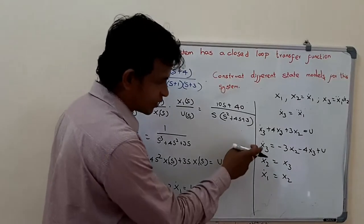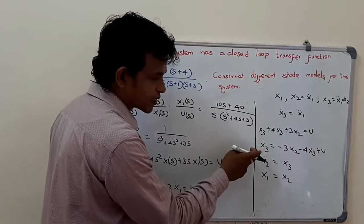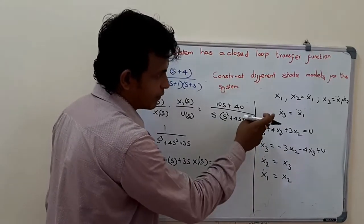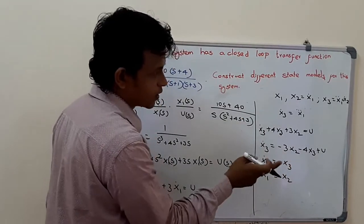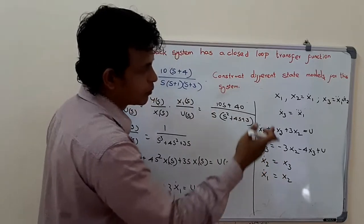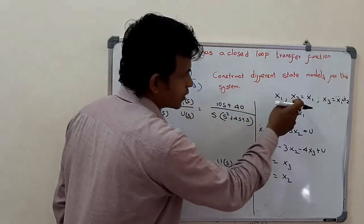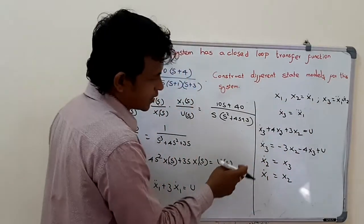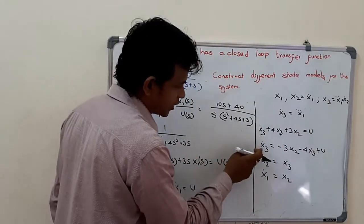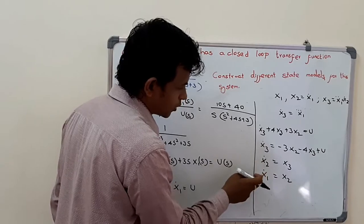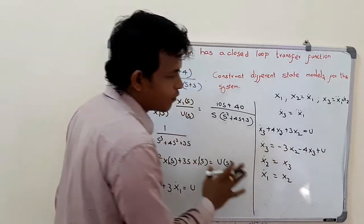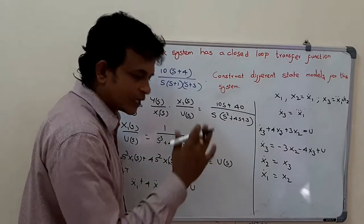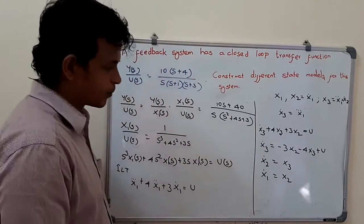We have got the equations for the first derivative of all state variables x1, x2, and x3. The first derivatives are x1 dot, x2 dot, and x3 dot, and we have derived equations for all of them.